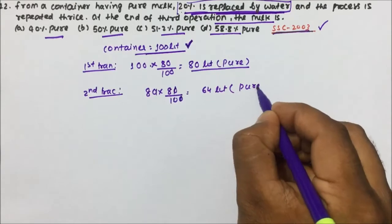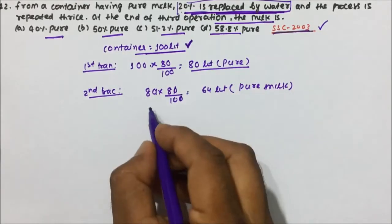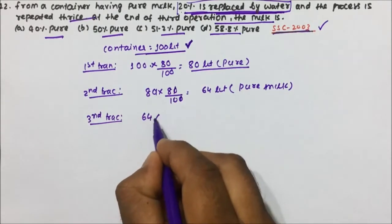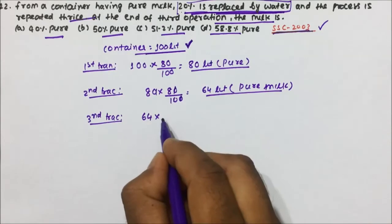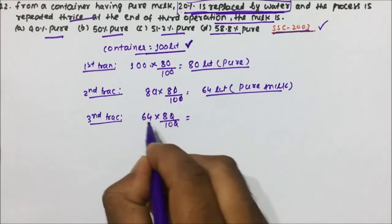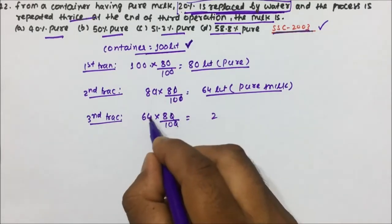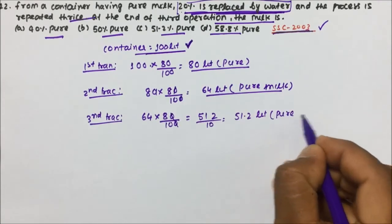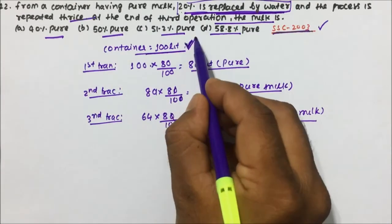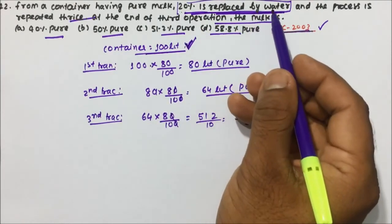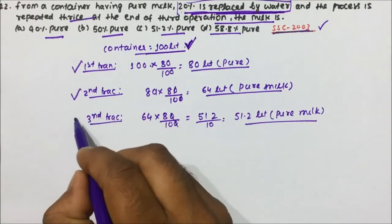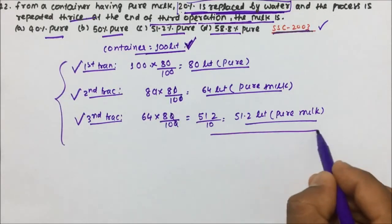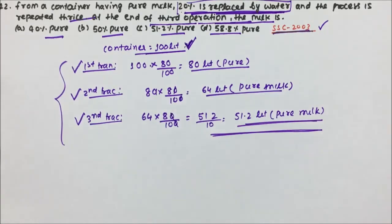In the second transaction, again 20% is replaced by water, so 80% of 80 = 64 litres of pure milk remain. In the third transaction, 80% of 64 = 51.2 litres of pure milk remain. At the end of the third operation, the pure milk is 51.2 litres, which is the final answer.